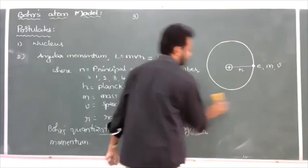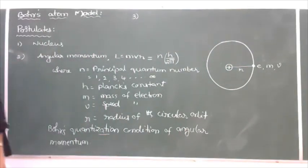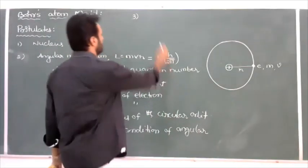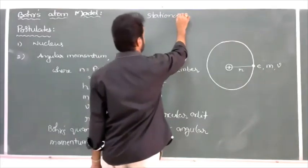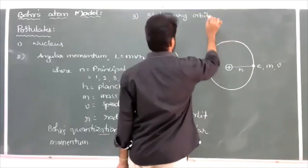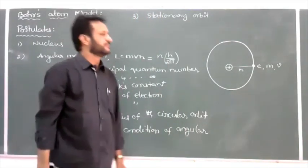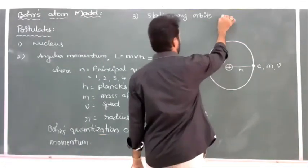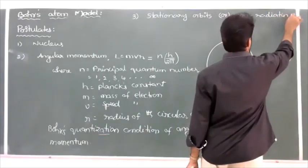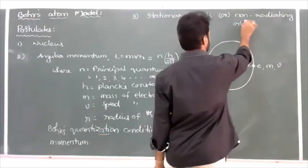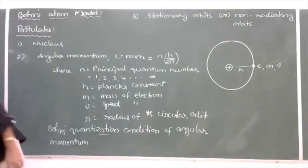Stationary orbit doesn't mean the electron is stationary — the electron is revolving around the nucleus. But as long as the electron is revolving around the nucleus, no energy is released or radiated by the electron. Hence these orbits are called stationary orbits or non-radiating orbits.